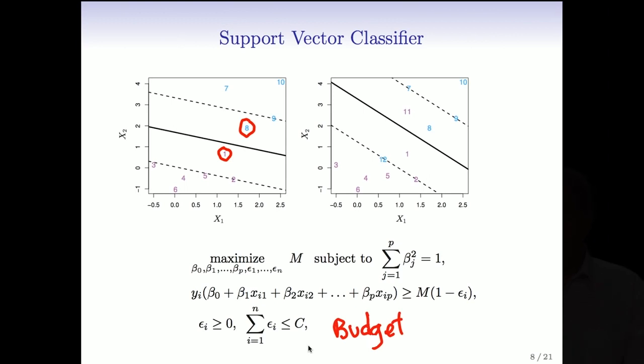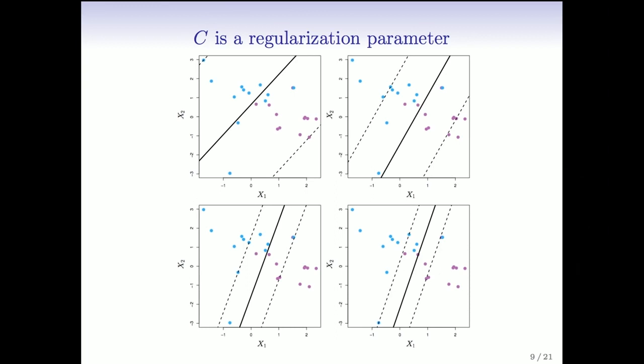Okay, again, convex optimization problem we can solve using the SVM package in R. C is now a tuning parameter, and as we change C, this soft margin is going to get wider or smaller. So as I said, it's a regularization parameter, and so here we've got four scenarios where we've changed C. Here's the biggest C.